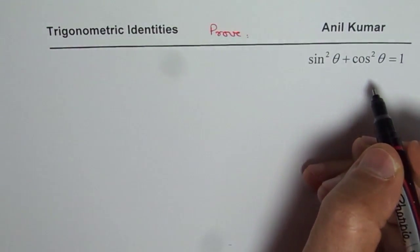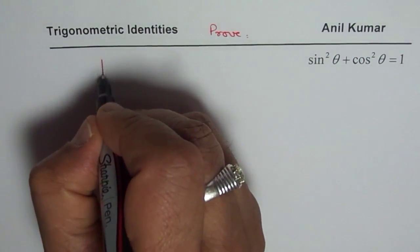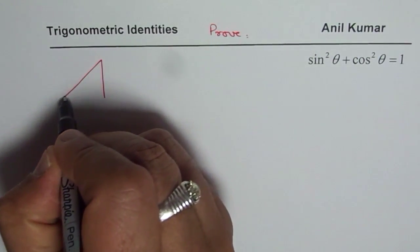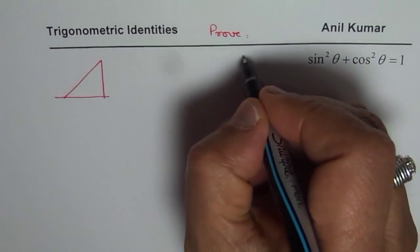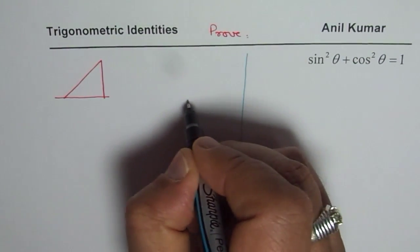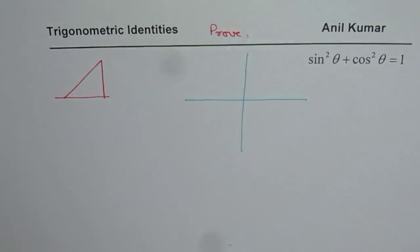We will prove it and we will use two methods. One method is using a right triangle, so I will make one right triangle here, and the other one I will prefer to use coordinate system. Since whenever we talk about sine theta and cosine theta,